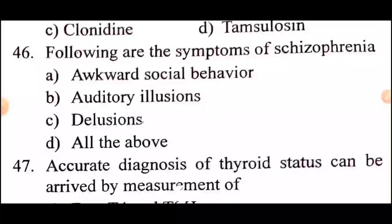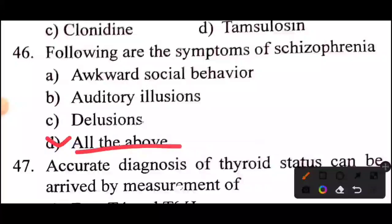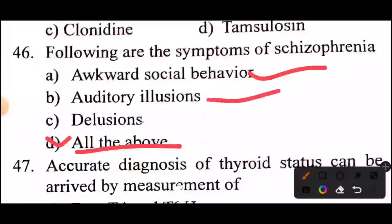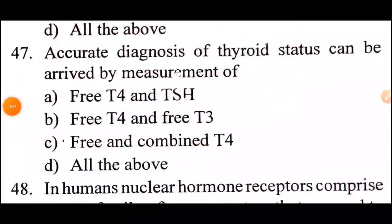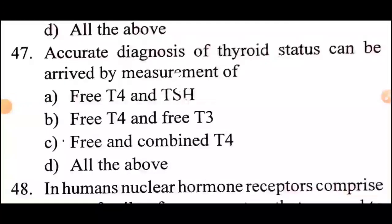Question 45: which of the following are symptoms of schizophrenia? Answer: option D, all of the above — acquired social behavior, auditory illusions, and delusions.